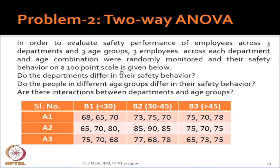Let us come to the problem for two-way ANOVA. The issue is safety behavior of a company across different departments and different age groups. We have considered three departments A1, A2, A3 and three age groups: less than 30 years of age, 30 to 45 years of age, and greater than 45 years of age. This table shows the different data points collected. For example, in the first cell, 68, 65, and 70 are the data values obtained for the combination A1 and B1.